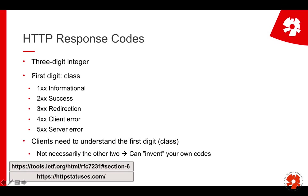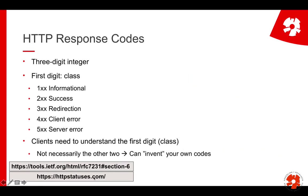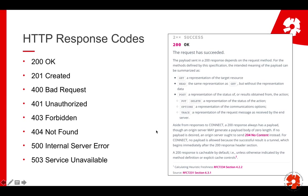Your client — for example your browser — needs to understand the first digit, because that tells you in general what happened. The other two numbers are less critical; if you write an application you can actually invent your own codes. There are typical ones though. For example, 200 OK — from the website httpstatuses.com — means the request has succeeded. 201 Created means you successfully created a resource.